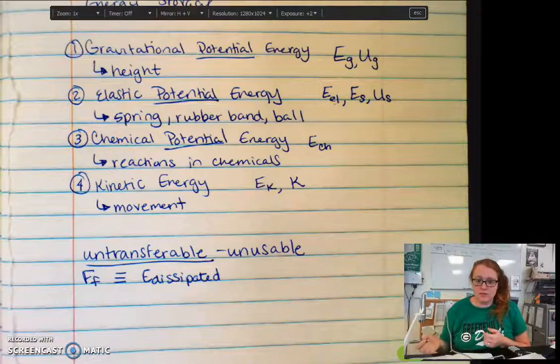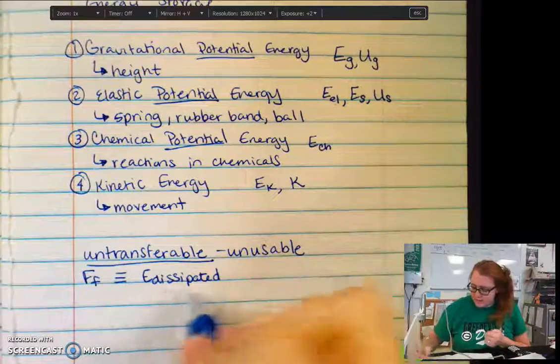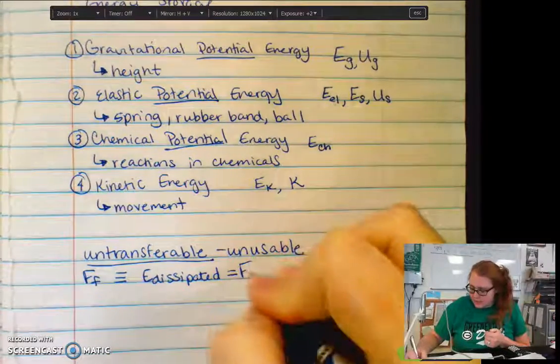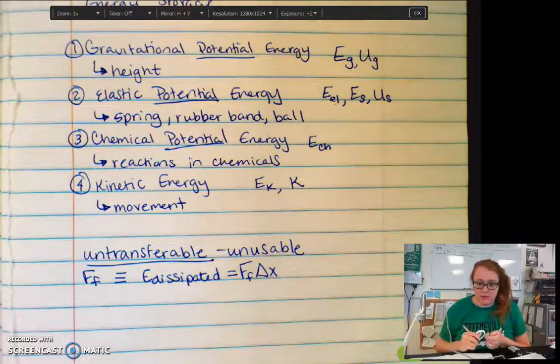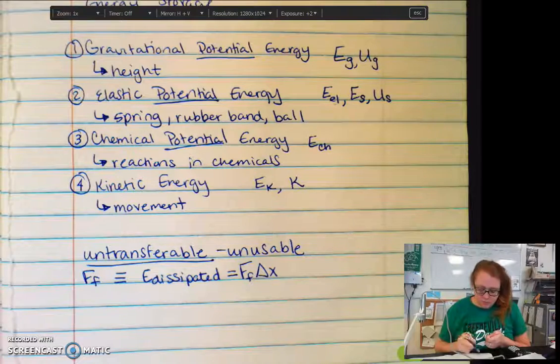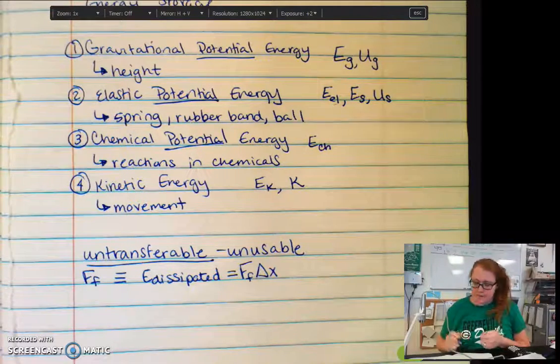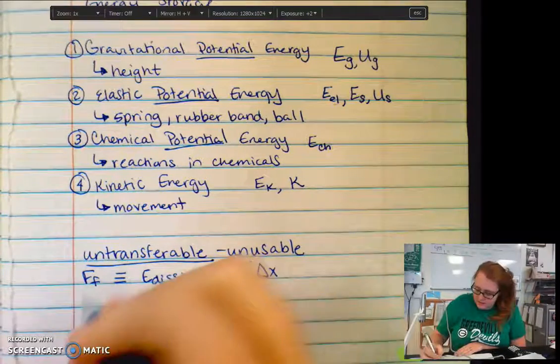When energy is dissipated, it's transferred, and we've discussed transfer of energy as work. So we know that dissipated energy due to friction would be the force of friction times delta x, because work is force times distance. And when energy is dissipated again, that is work.